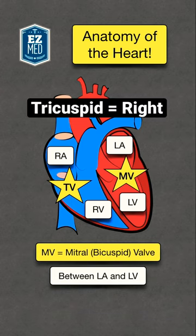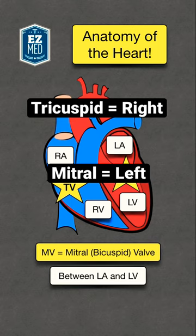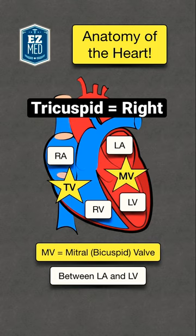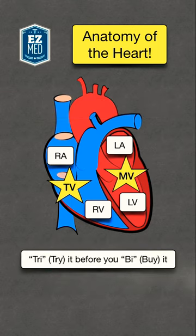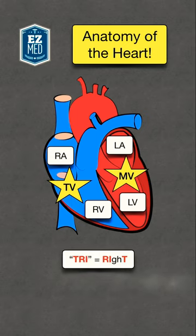There are several ways you can remember the tricuspid valve is on the right and the mitral valve is on the left. You can use the saying 'try it before you buy it' to remember the tricuspid valve comes first. Another trick is that the letters 'tri' appear in the word 'right' to remember the tricuspid is on the right.